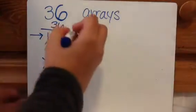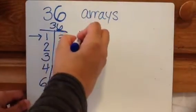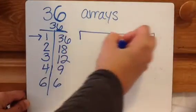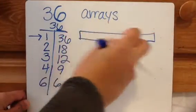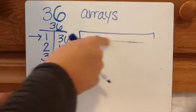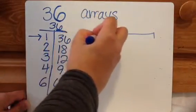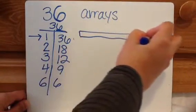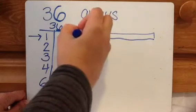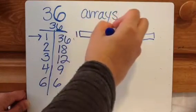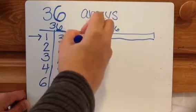Now I'm going to create the arrays. What I normally have my students do is get out grid paper or centimeter paper or graph paper or something, and I have them cut it out. So they would make a one by thirty-six.